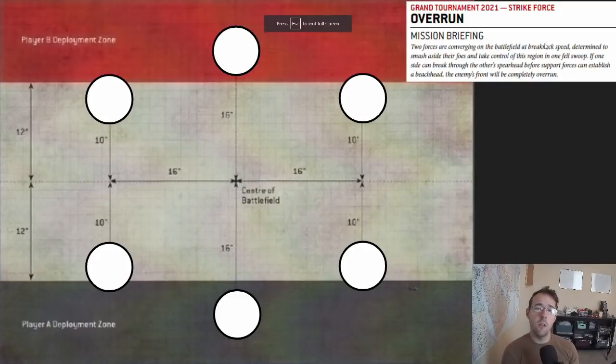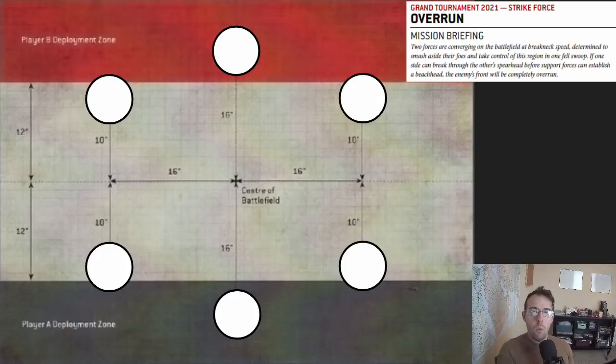Today we're going to be looking at the overrun mission. This is a hold two, hold three, hold more mission, so that means you need to be holding at least two objectives to get five points a turn. I've replaced the objective markers with big white circles that show the three inches that you can be near an objective to be able to control it.